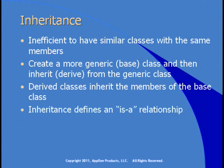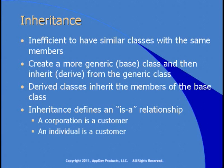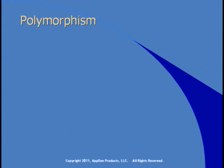Inheritance is used to define an 'is-a' relationship. A corporation is a customer, and an individual is a customer. So you can create a customer base class and then inherit from that to get corporate customers and individual customers. One of the benefits of this is efficient coding.